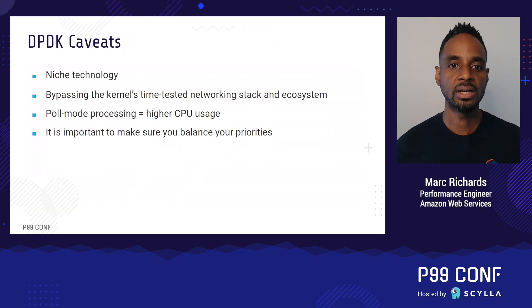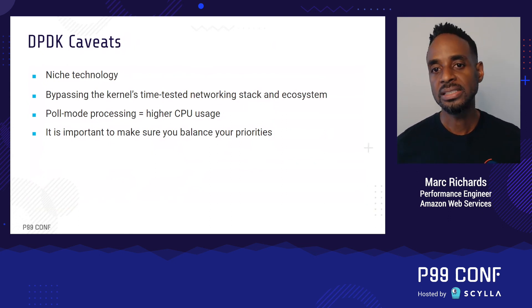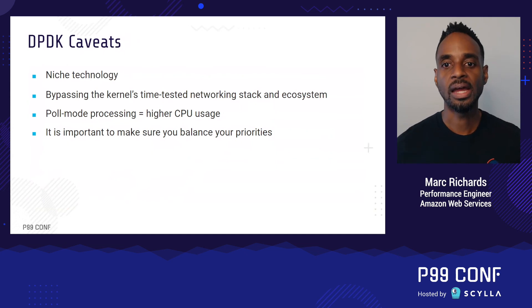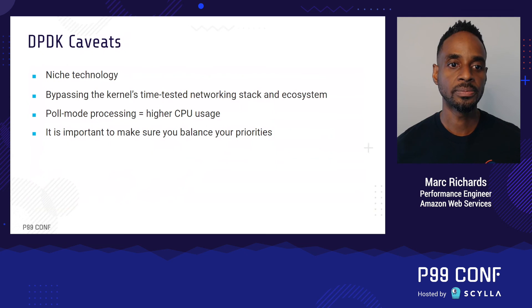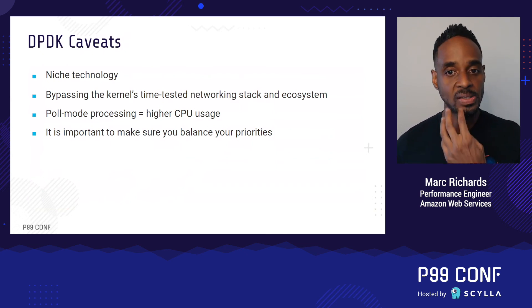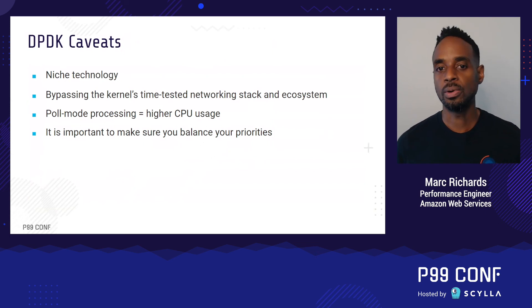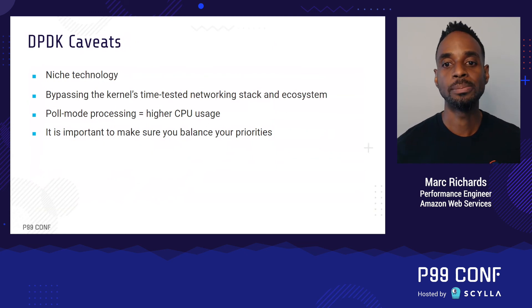To start off, DPDK is a bit of a niche technology, so finding articles and examples can be very challenging. Bypassing the kernel also means bypassing its time-tested networking stack and rich ecosystem of existing tools for securing and monitoring your traffic. Also, if you use poll-mode processing, your CPU gets pegged at 100% utilization — in addition to not being very energy efficient, it also makes it very difficult to troubleshoot your workload just using CPU as a gauge. At the end of the day, it's about balancing your priorities and making the right choice for your specific use case.